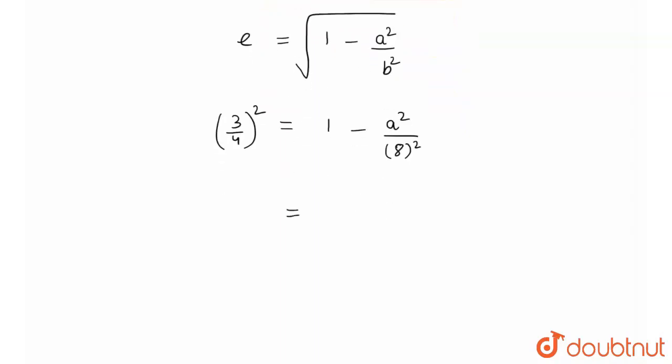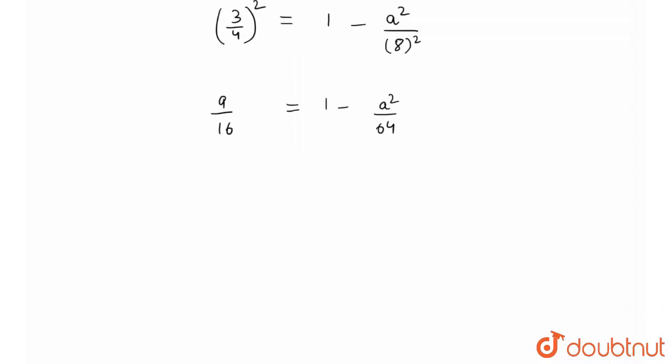Therefore I will get 9/16 = 1 - a²/64, which gives 36 = 64 - a². Therefore I will get the value of a² as 64 - 36, which would be equal to 28.